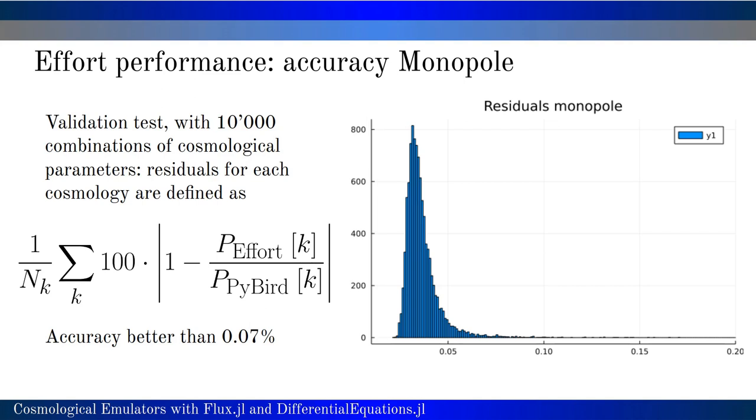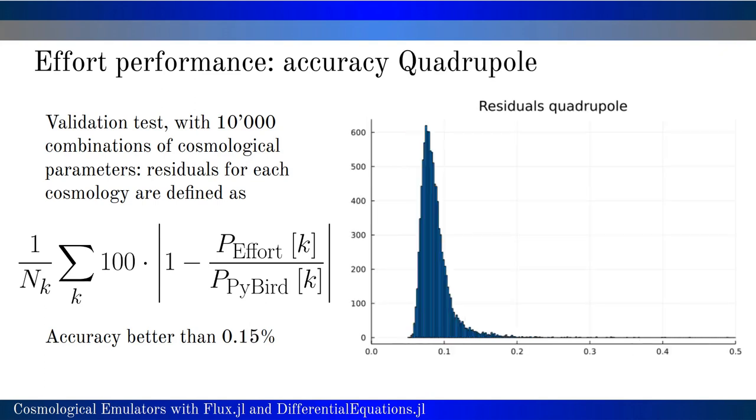With 10,000 combinations of cosmological parameters not present in the training dataset. Here are shown the distribution of the residuals for these datasets, and we can see that the accuracy is way better than 0.07% for the monopole, which is one of the observables I want to emulate, and for the quadrupole, the accuracy is better than 0.15%.